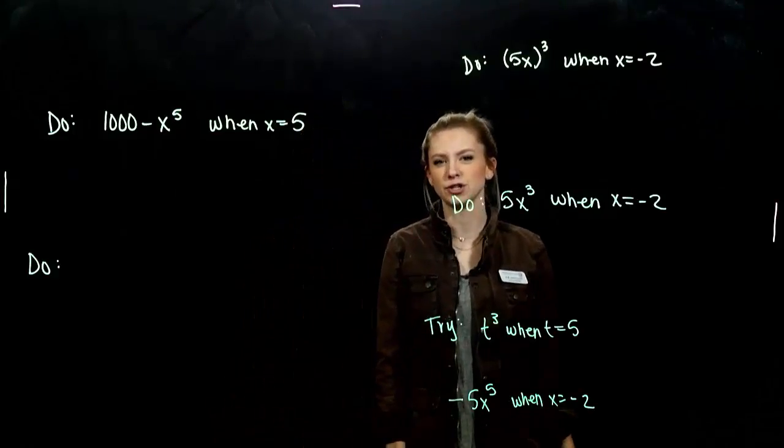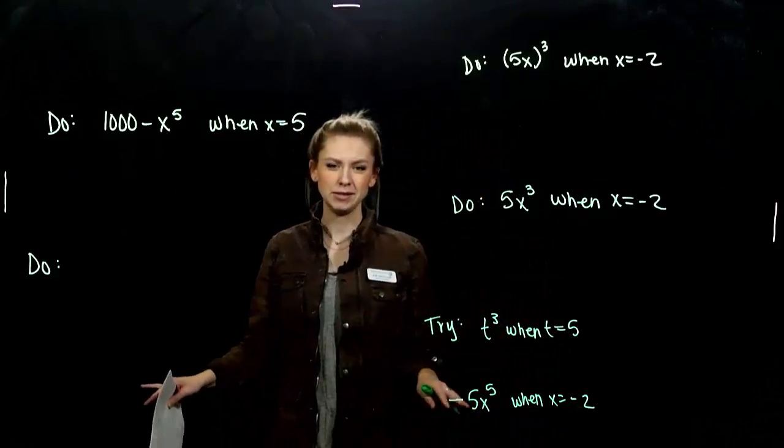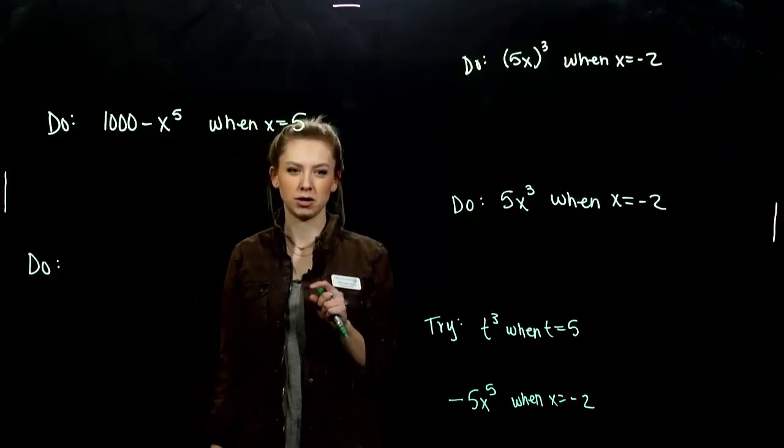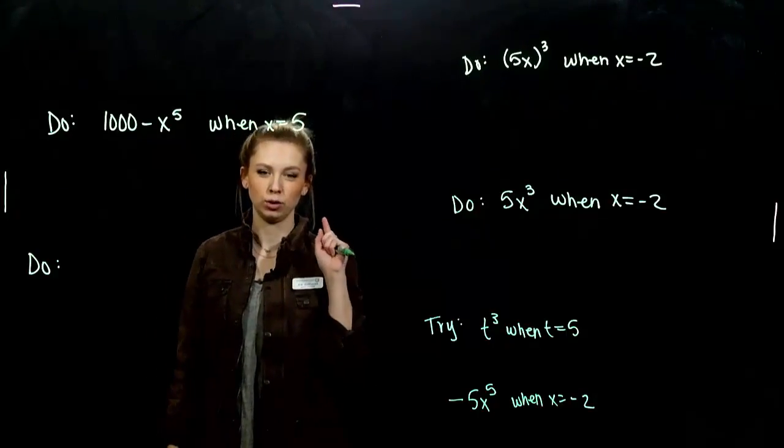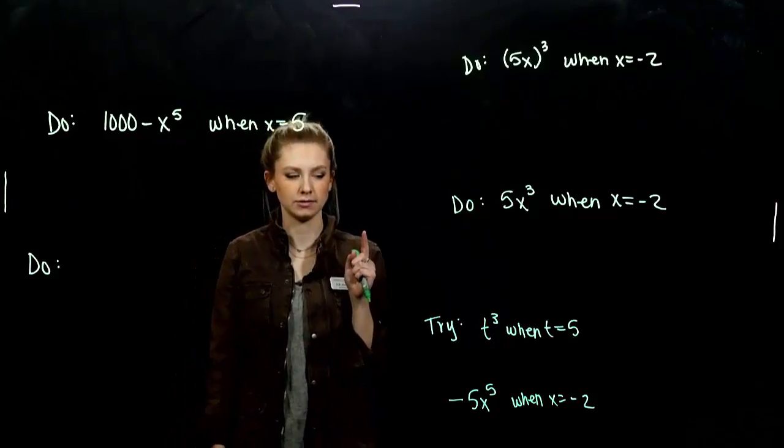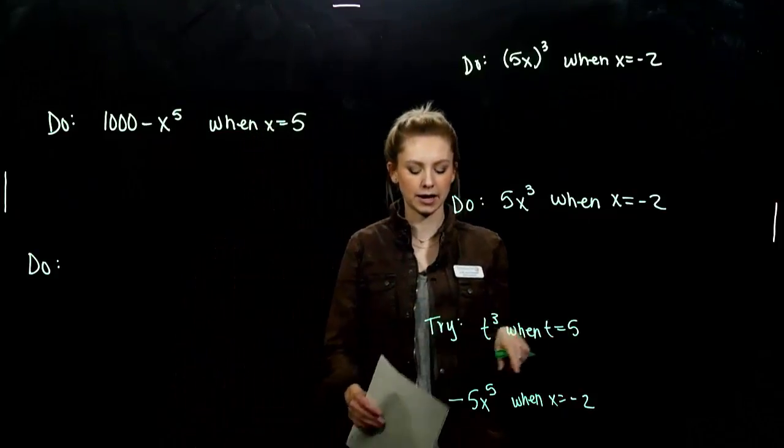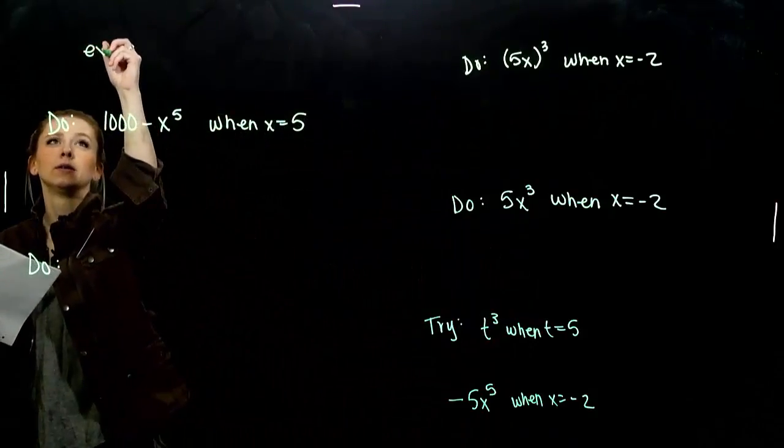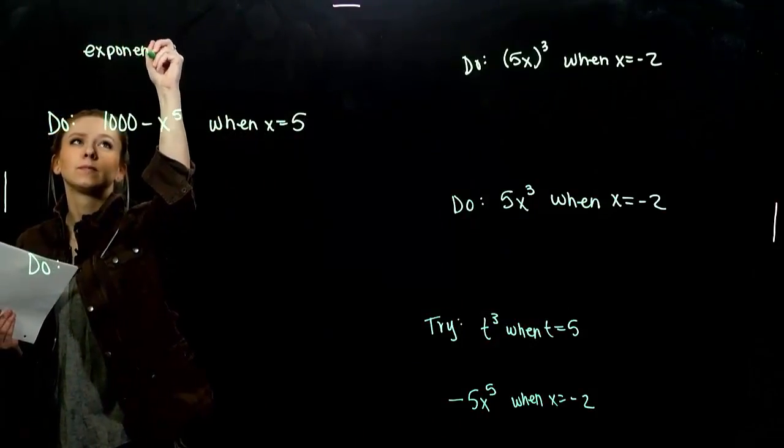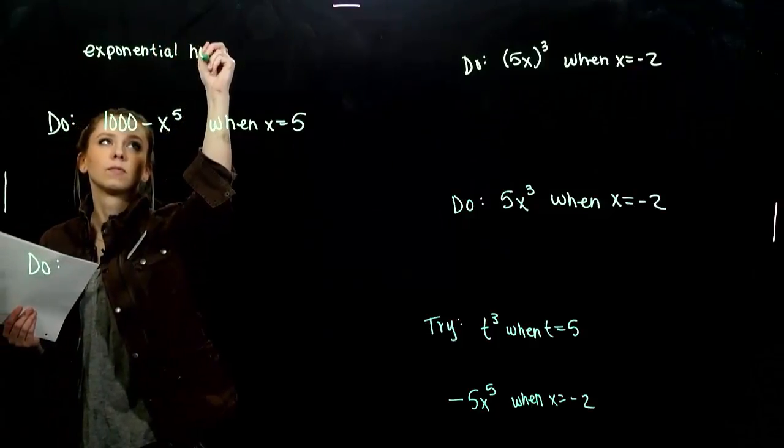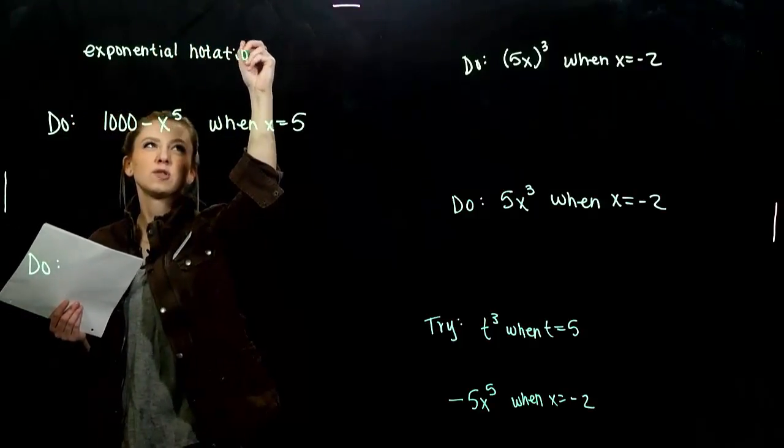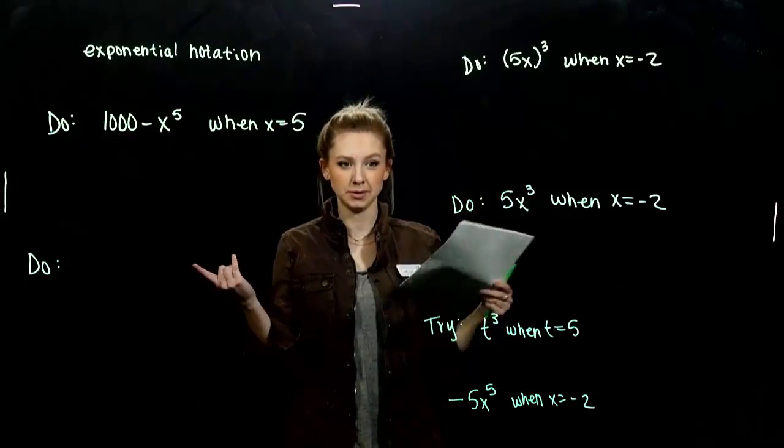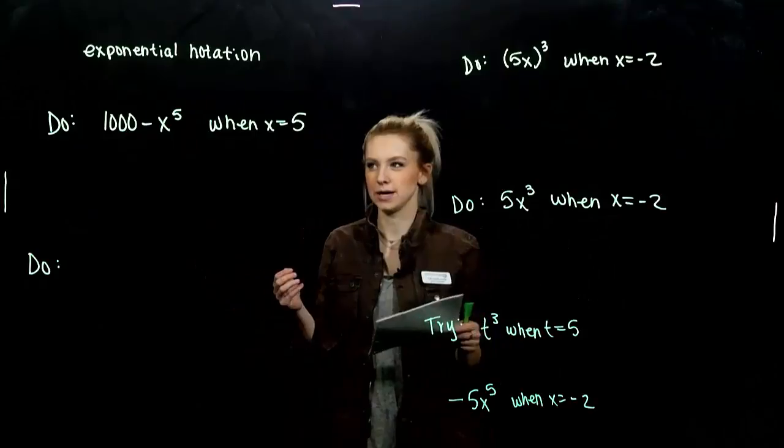As we're looking at algebraic expressions previously, what we've been dealing with has been linear, straight lines, and the largest power on one of our variables has been 1 in every single case. Now we're going to look at algebraic expressions that involve exponential notation. It'll change the picture of what we're looking at, but if our highest exponent is 1, we know it's going to be linear, and we can handle those cases.